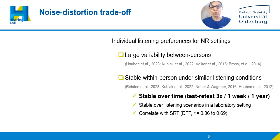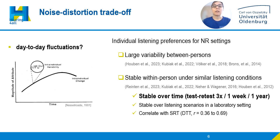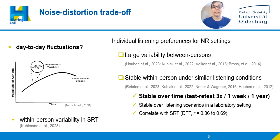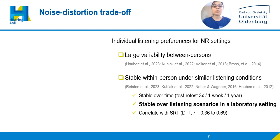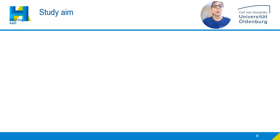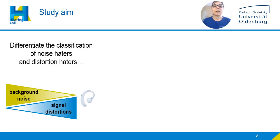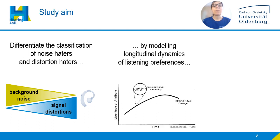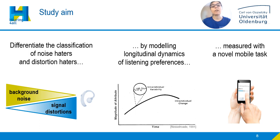But can we infer full stability of listening preferences with a single test-retest? How about potential day-to-day fluctuations? Indeed, we know that other neuropsychological processes, like hearing itself, fluctuate over time within the individual. And would it be possible to design a mobile measure of noise reduction strength preferences, facilitate repeated assessment, and measure this straight off outside the lab? Our goal is to improve and further differentiate the classification of noise haters and distortion haters by modeling longitudinal dynamics of listening preferences measured by a novel mobile task.